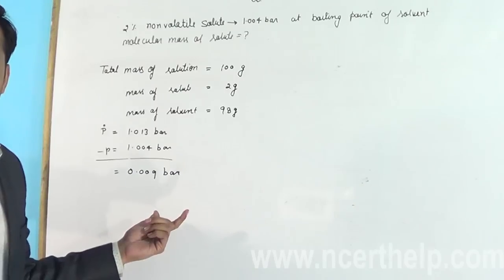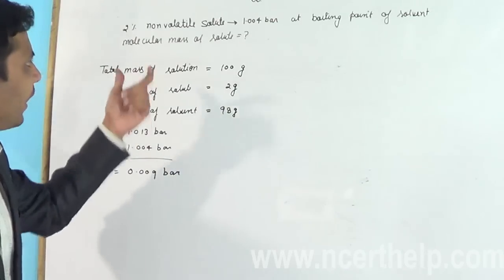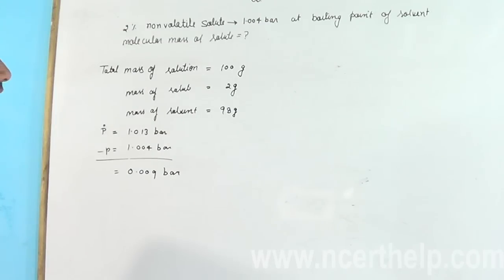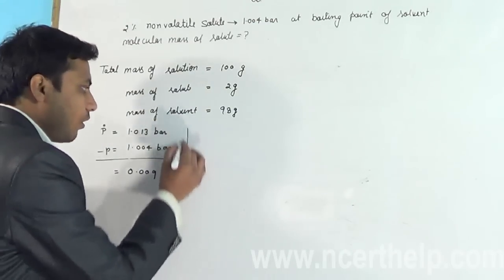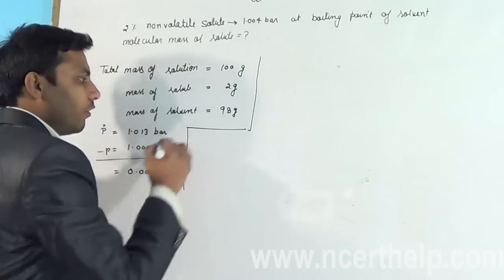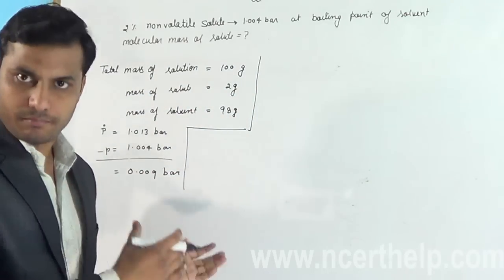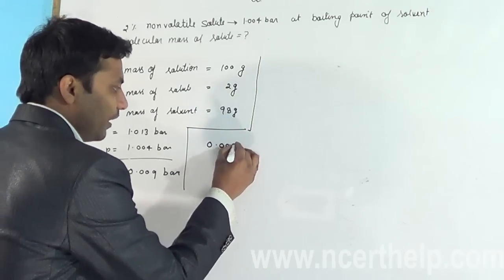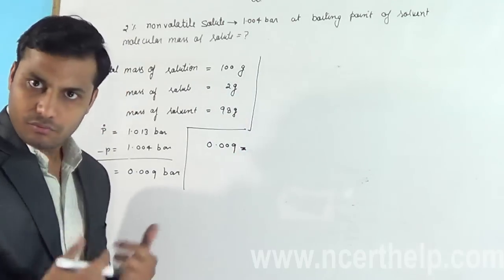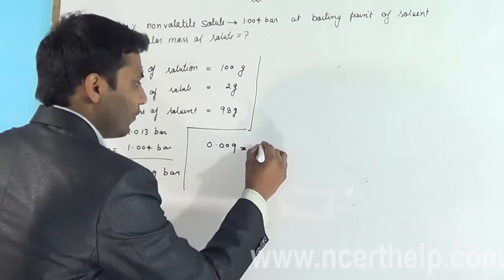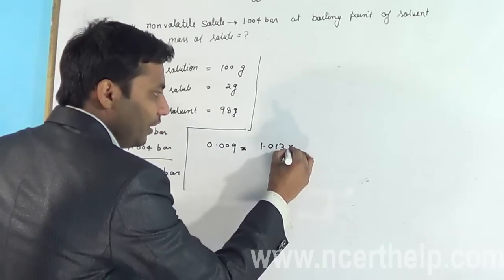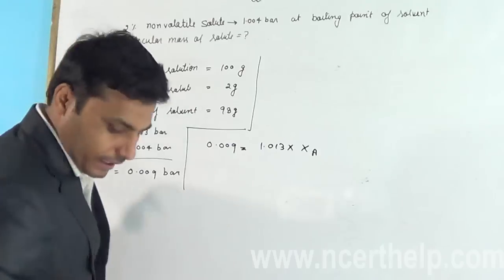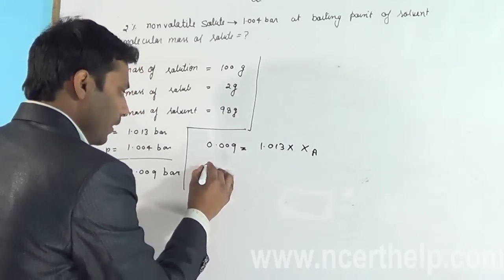So we can write the formula of Raoult's law that the change in this vapor pressure, 0.009, will equal to total pressure, which was 1.013, into molar fraction of solute. I am taking X_A as solute here.